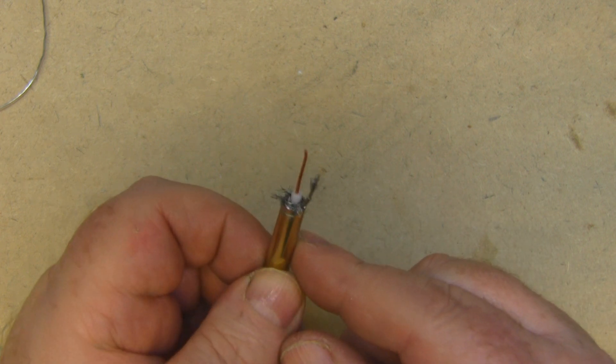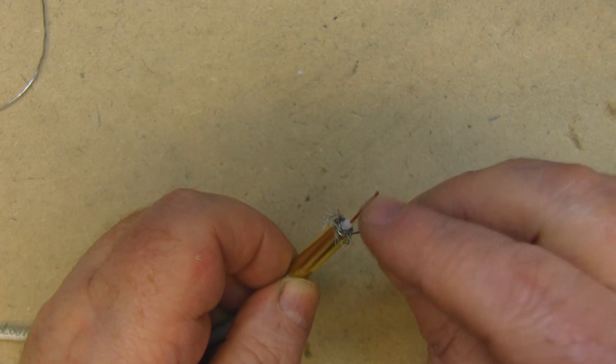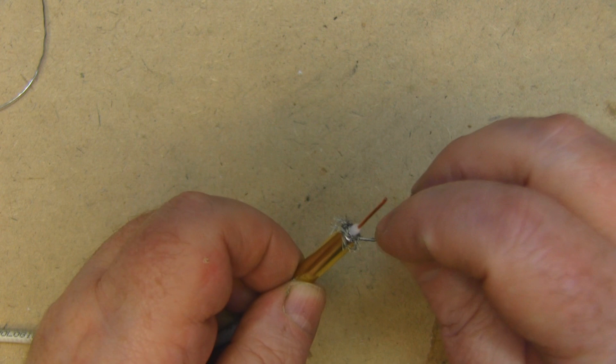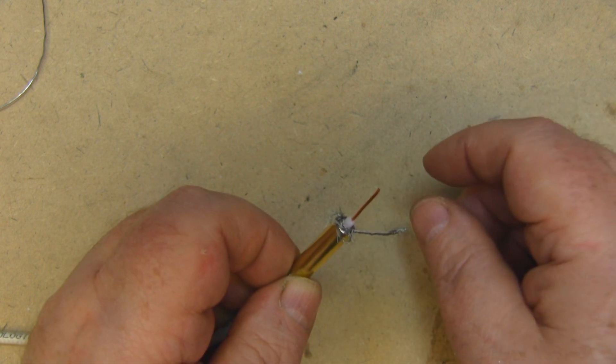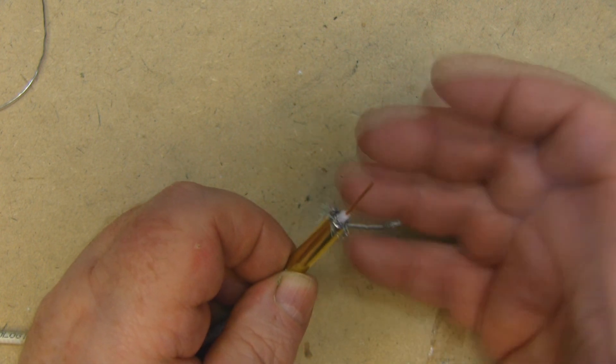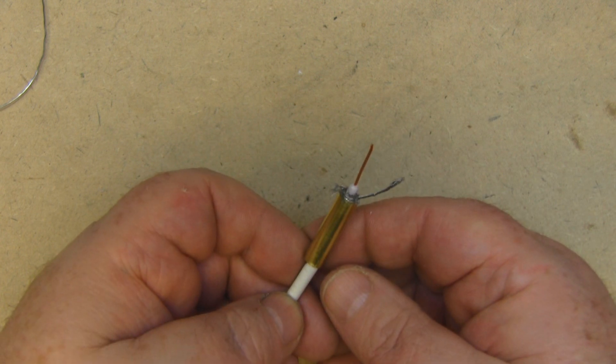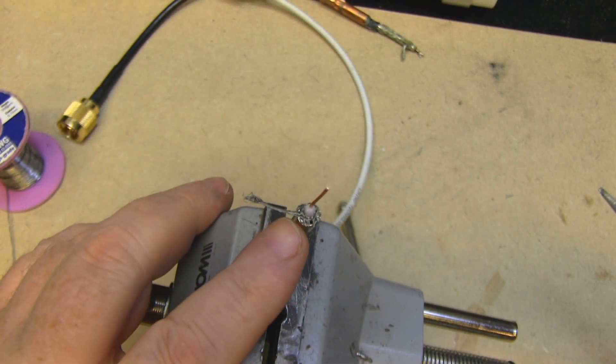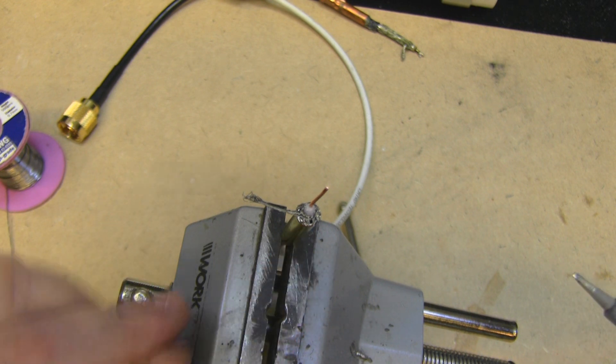Now what I'm going to do is pre-tin everything up and then solder the balun into place just like that. So it's soldered on the top here, and then we've got this for the ground to connect to the main driven element. Then we can connect this to the main driven element and basically that's our balun.